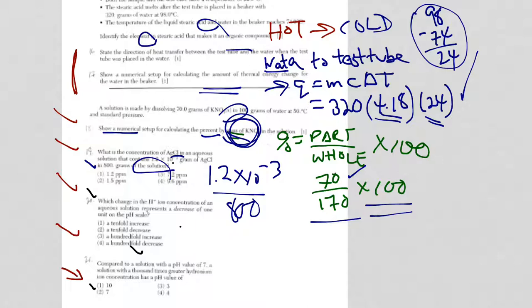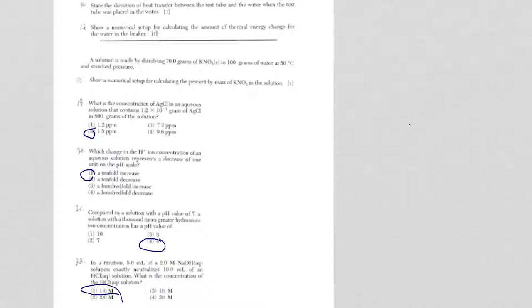So that includes the 1.2 times 10 to the minus 3. But the key is you're going to divide, and don't forget you have to multiply by a million to get the answer. And the answer was, I think, 1.2 parts per million. Okay, it didn't mess it up. It is 1.5 parts per million, and I did check, it is 1.2 times 10 to the minus 3 grams.